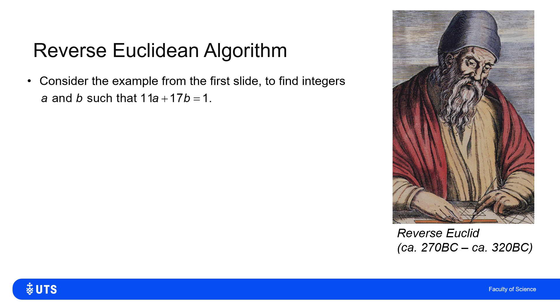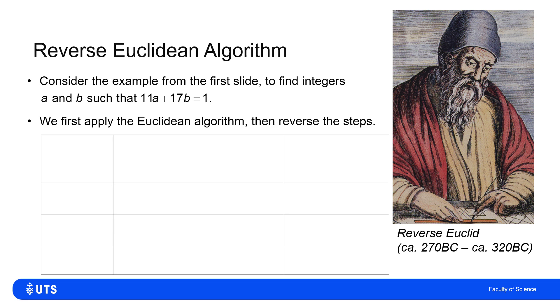Let's find a and b such that 11a plus 17b is one. If we follow the Euclidean algorithm, I express 17 in terms of 11 with a remainder of 6, then 11 in terms of 6 with a remainder of 5, 6 as multiple of 5 and a remainder of 1, and lastly no remainder at all.